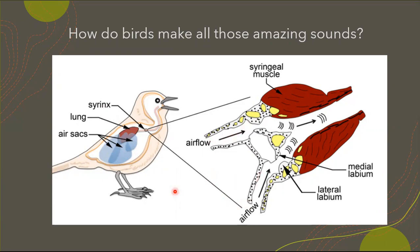The two bronchi allow airflow from the lungs through the syrinx independently — it's really important to remember that the airflow is independent. Throughout the syrinx there are many layers of membranes: a lateral labium, the medial labium, and a complex muscle system surrounding the entire syrinx. Sound is produced by air passing through the syrinx, causing vibrations. The muscles control the airflow and, as they constrict, control the amount and intensity of vibrations. It's the vibration of the lateral labium that determines the sound being produced.